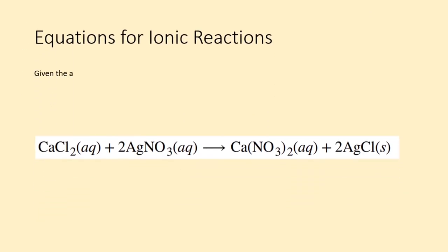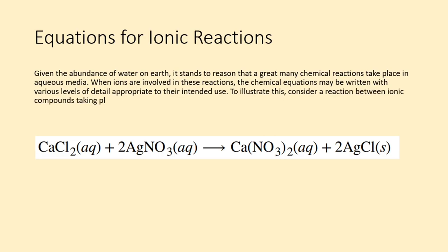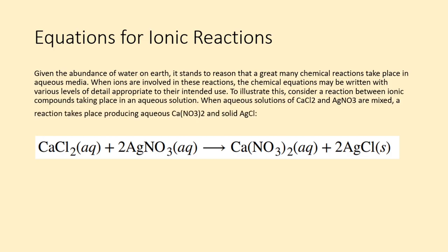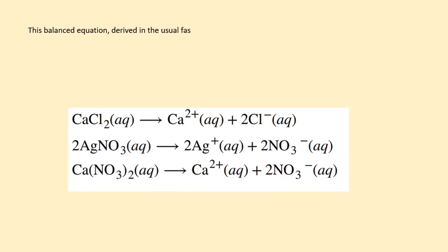Given the abundance of water on Earth, it stands to reason that a great many chemical reactions take place in aqueous media. When ions are involved in these reactions, the chemical equations may be written with various levels of detail appropriate to their intended use. To illustrate this, consider a reaction between ionic compounds taking place in an aqueous solution. When aqueous solutions of CaCl2 and AgNO3 are mixed, a reaction takes place producing aqueous Ca(NO3)2 and solid AgCl. This balanced equation, derived in the usual fashion, is called a molecular equation because it doesn't explicitly represent the ionic species that are present in solution.